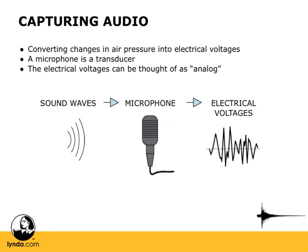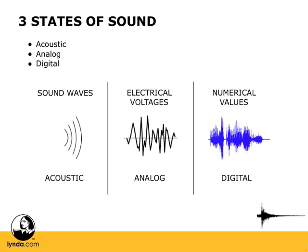Once the microphone has converted those sound waves, the electrical voltages we get can be thought of as analog. Let's take a look at the three different states of sound: there's the acoustic, the analog, and the digital. Acoustic are the sound waves — that's the sound out around us. Analog are electrical voltages; these are what run through your guitar cable or hook up your home stereo. And then finally there's the digital state, where information is represented by numerical values, or ones and zeros — it's binary data, or the language of computers.